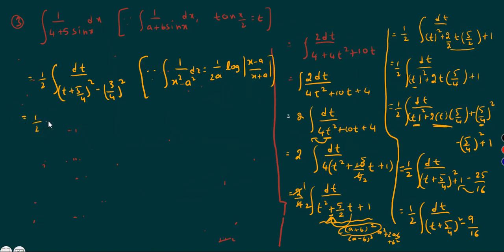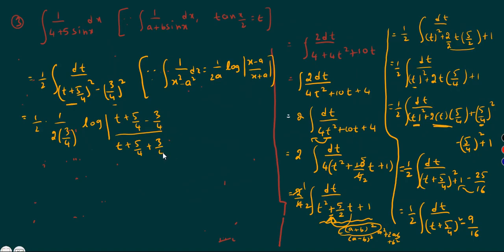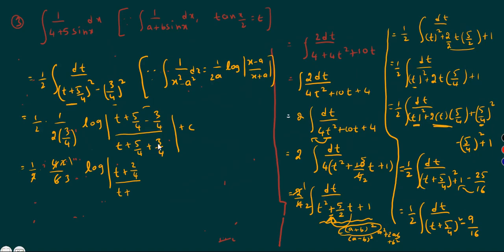Applying the formula with 1/2 outside and 1 by 2a where a equals 3/4, so 2a equals 3/2, giving 1 by (3/2) equals 2/3. Overall constant is 1/2 times 2/3 equals 1/3. So we get 1/3 log mod of [(t plus 5/4 minus 3/4) by (t plus 5/4 plus 3/4)] plus c. Simplifying numerator: 5/4 minus 3/4 equals 2/4. Denominator: 5/4 plus 3/4 equals 8/4 equals 2. So we get 1/3 log mod of [(4t plus 2) by (4t plus 8)] plus c.